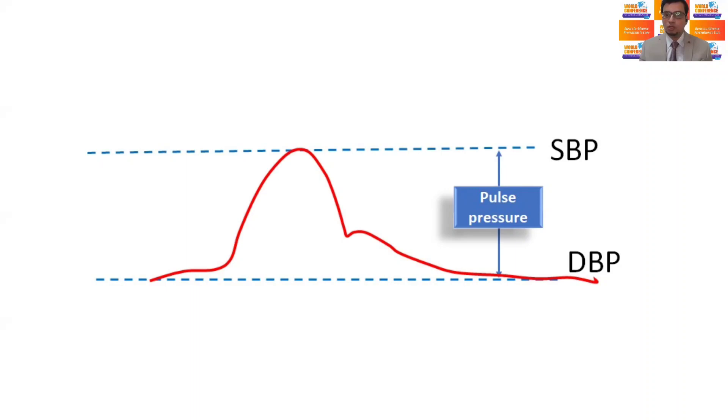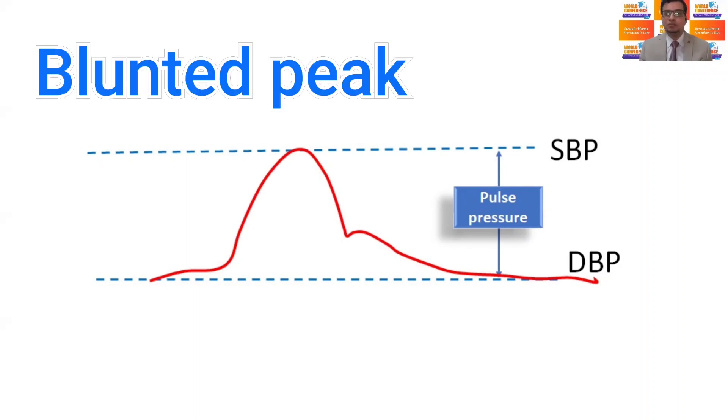Now the deviations from this normal waveform can be seen in various critical illnesses and situations, which I would like to discuss over here. The systolic upstroke may be seen blunted in case of poor LV systolic function or aortic stenosis, where stroke volume is very low.